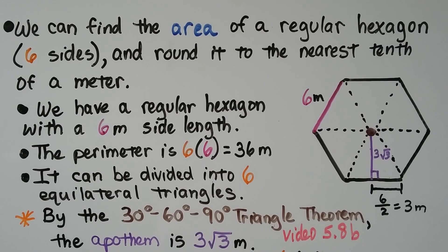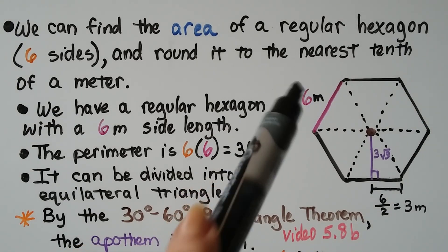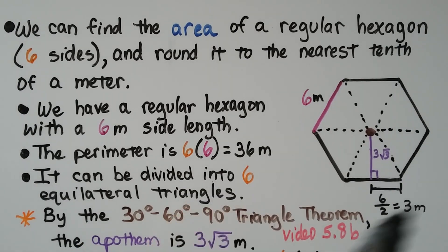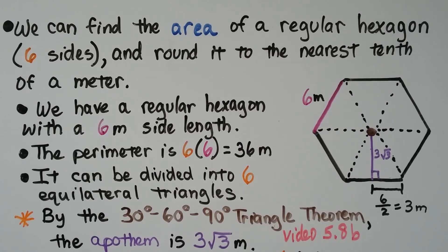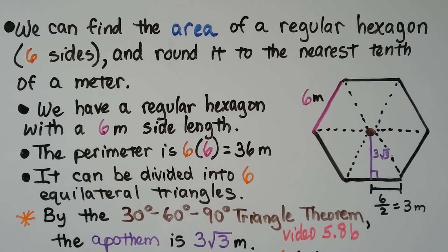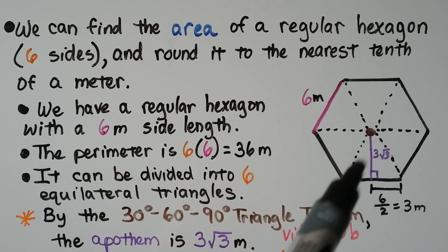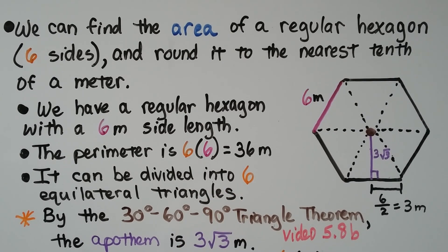We can find the area of a regular hexagon with six sides and round it to the nearest tenth of a meter. We have a regular hexagon with a six meter side length, so our perimeter is six sides times six meters, which is 36 meters. It can be divided into six equilateral triangles, and by the 30-60-90 triangle theorem — which we learned back in 5.8b — the apothem is three times the square root of three meters.